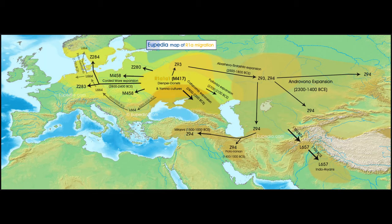Z94 expands further east and goes south into the area where the Indo-Iranians form. There it becomes proto-Iranian, travelling west, and further becomes associated with the Mittani. It goes south-east from the Indo-Iranian homeland, and L657 enters the Indus river basin, and from there it enters India proper.